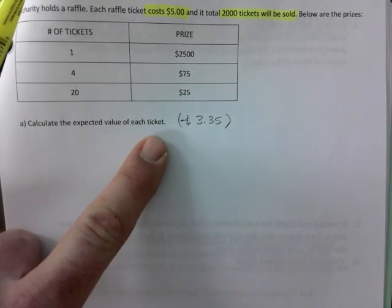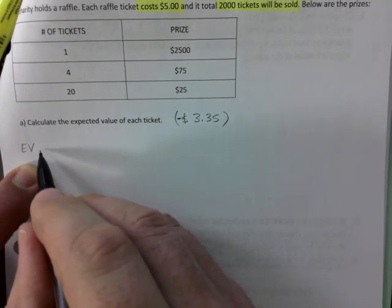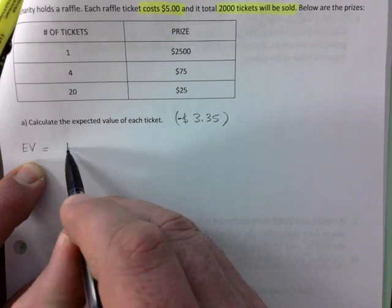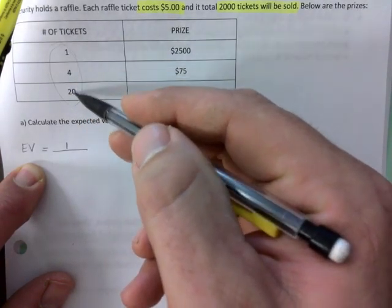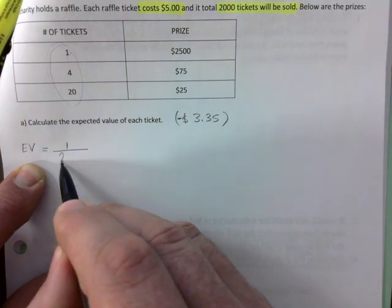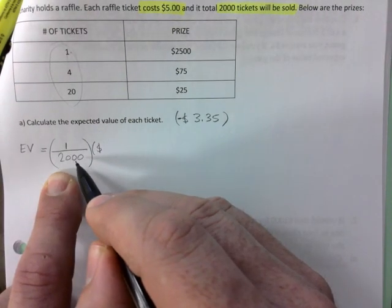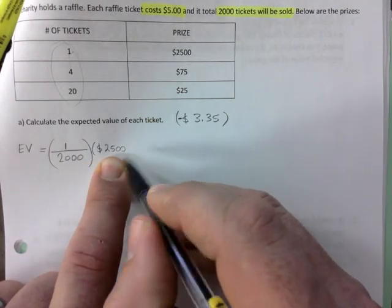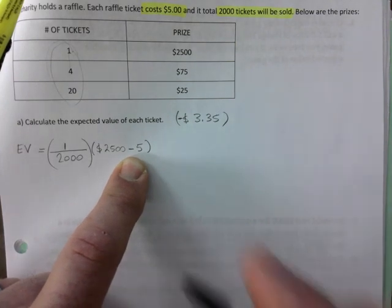Calculate the expected value of this ticket. I gave you a formula - you need to go back to page 70 or 69 somewhere in there to figure this out. There are three prizes to be won. So one out of 2000, that's the probability of winning that prize. You multiply that probability times the amount you can win, but you must subtract the five dollars that it costs to buy a ticket.